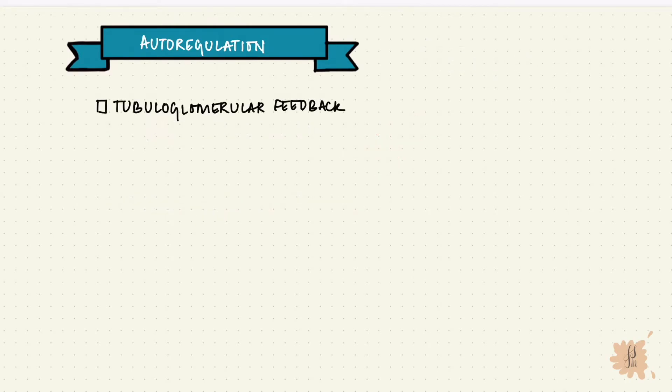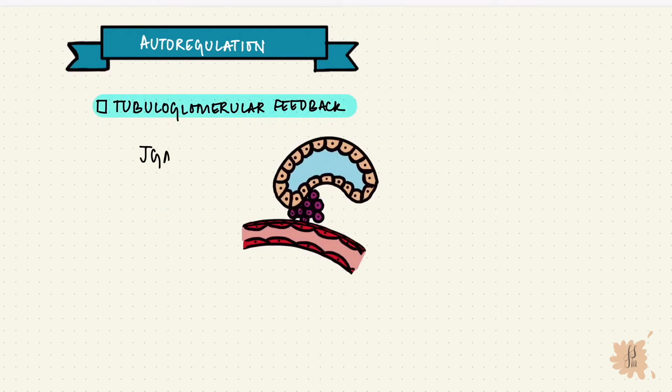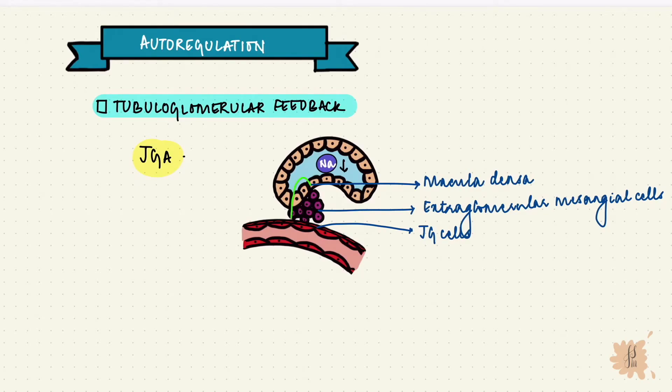This feedback is by the juxtaglomerular apparatus, which includes three things: the macula densa of the early distal tubule, the extraglomerular mesangial cells, and the juxtaglomerular cells of the afferent arteriole. The macula densa senses flow rate and changes in the sodium chloride concentration in the early distal tubule. If it senses a low sodium chloride concentration, it stimulates the JG cells to produce renin.